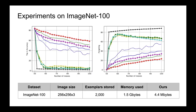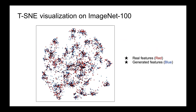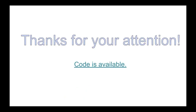We have achieved state-of-the-art performance on large datasets such as ImageNet, as shown in red lines. We only need 4.4 megabytes of memory storage compared to exemplar-based methods with 1.5 gigabytes. Here we show the TSNE visualization of generative features and real features for 25 incremental tasks — they are very well overlapped. Here are the conclusions. Thanks for your attention.